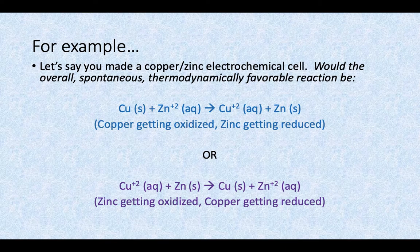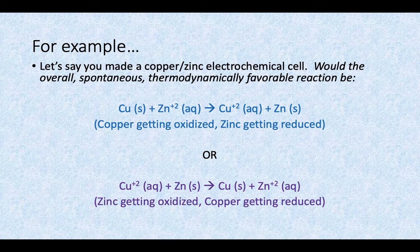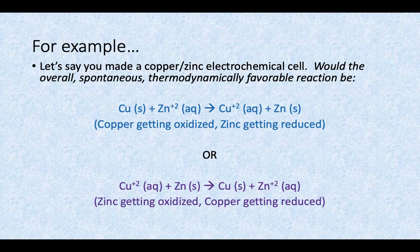Let's say you made a copper-zinc electrochemical cell with the overall spontaneous thermodynamically favorable reaction B, where you have elemental copper in solid form reacting with an aqueous solution of zinc to produce a copper ion solution and solid zinc. In that reaction, the copper is being oxidized and the zinc is getting reduced. Or would the opposite happen — would the copper solution react with solid zinc to produce elemental copper and a zinc ion solution, where the zinc is getting oxidized and the copper is getting reduced? How do we know which direction to draw our arrow for where the electrons are going to and where they're coming from?